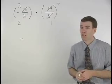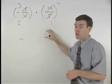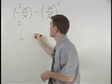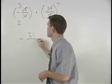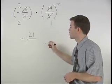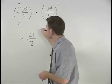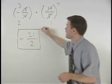Now we can multiply across the numerators and across the denominators. So we have 3 times 7 which is 21 and 2 times 1 which is 2. So our answer is negative 21 halves.